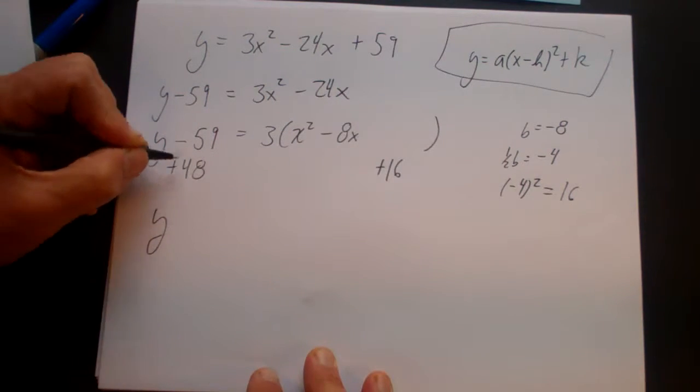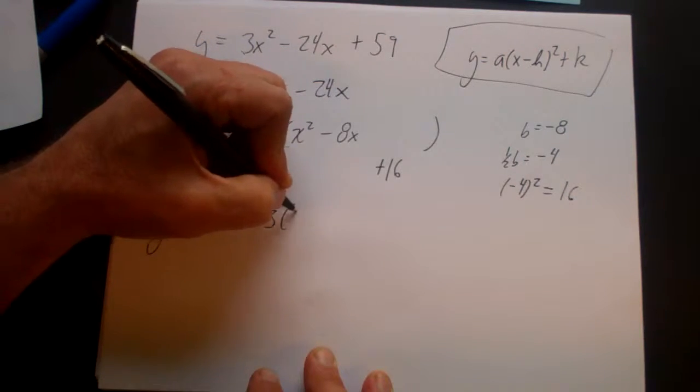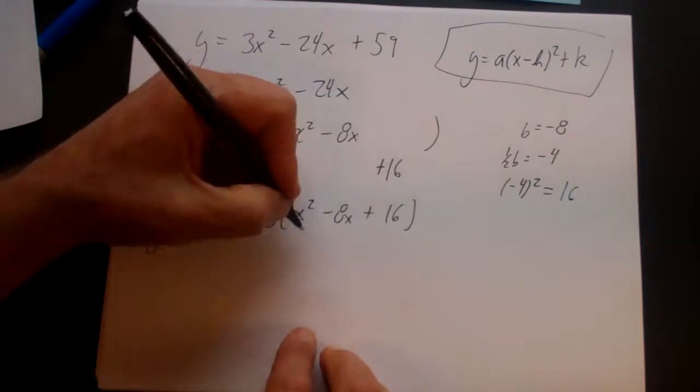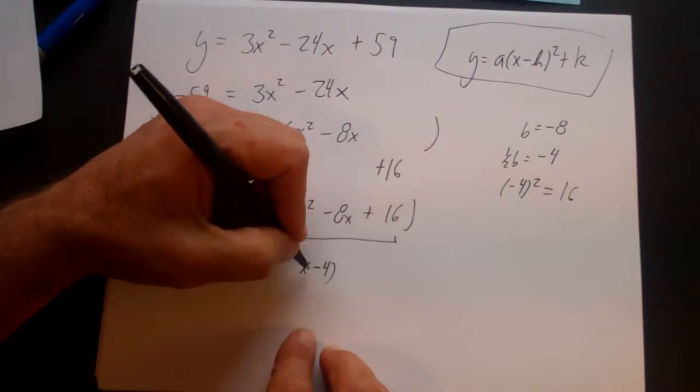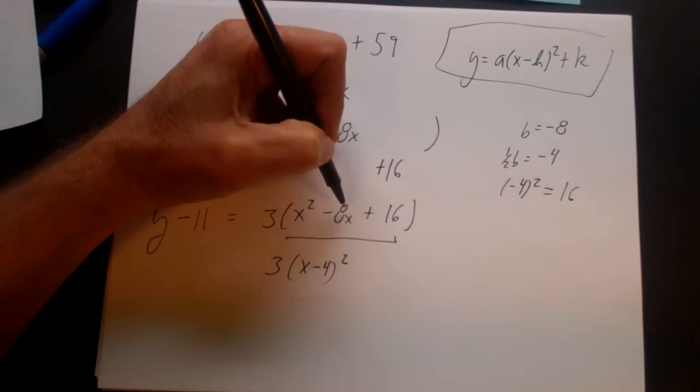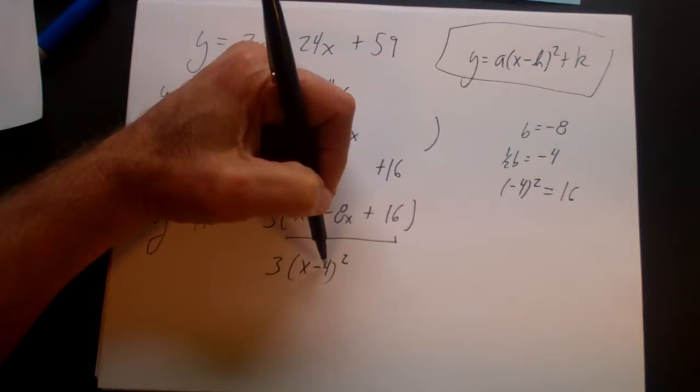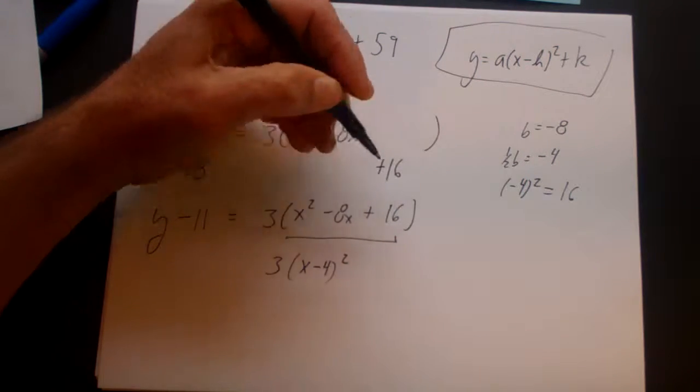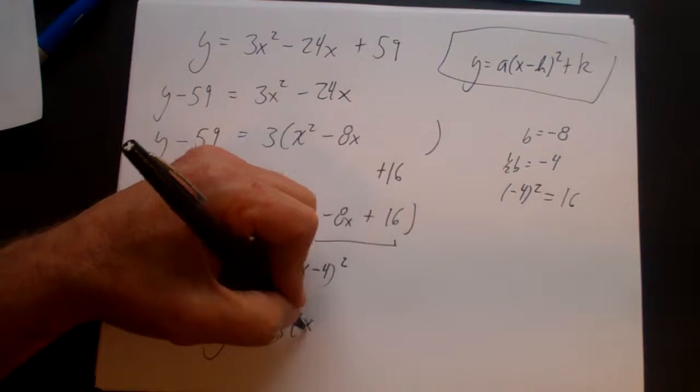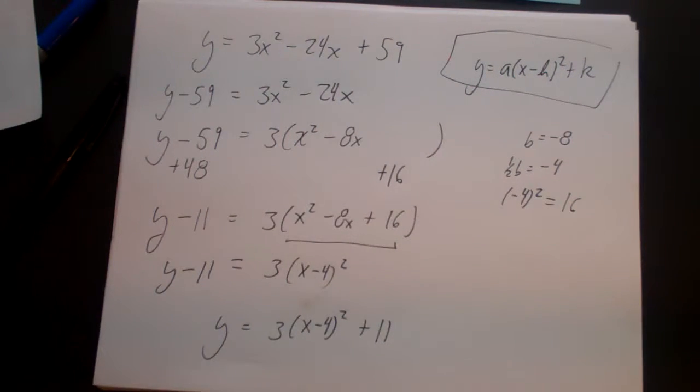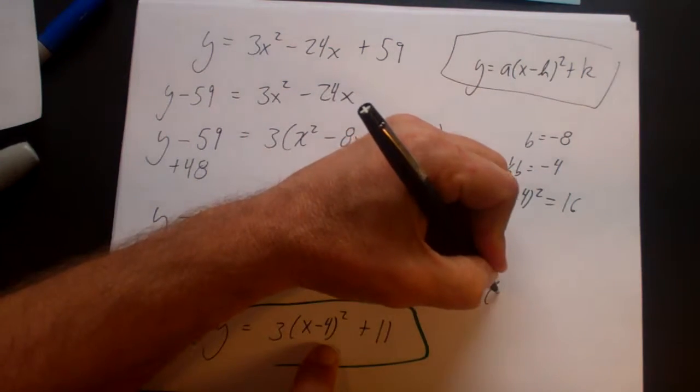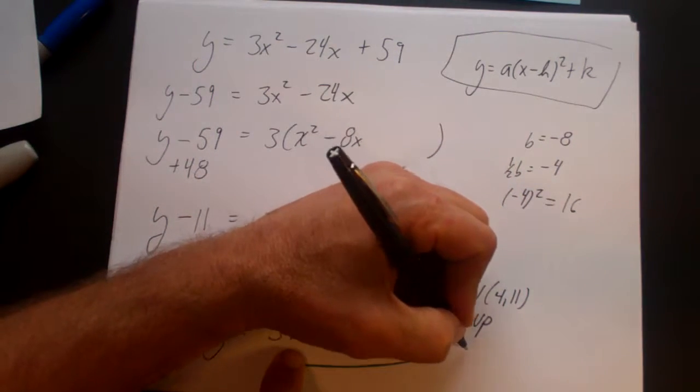And now I'm just going to rewrite what I have. That's y. That's going to be minus 11 equals 3 times x squared minus 8x plus 16. Now I'm going to factor this. That becomes x minus 4 squared times 3. Now remember, what I need to do here is I need to find two numbers that multiply to 16 and add to a minus 8. And minus 4 plus minus 4 is minus 8. Minus 4 times minus 4 is a positive 16. And now what I'm going to do is I'm going to add 11 to both sides. Then I'm done. Then I can also read off what the vertex is here. The vertex here is 4, 11. It's going to open up and it's going to be narrow. And that's how you rewrite in vertex form.